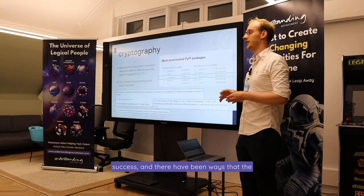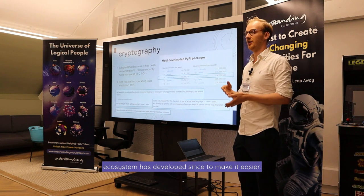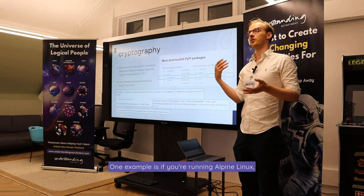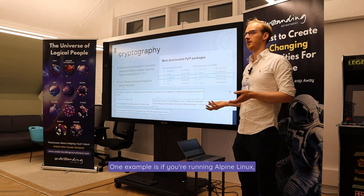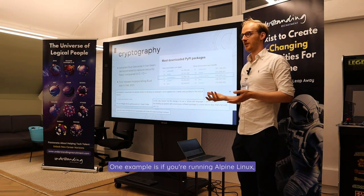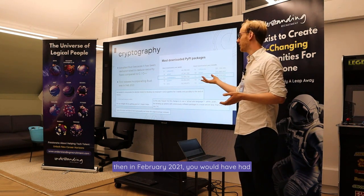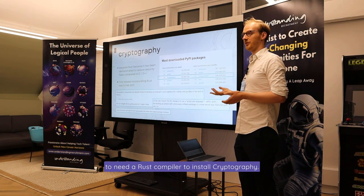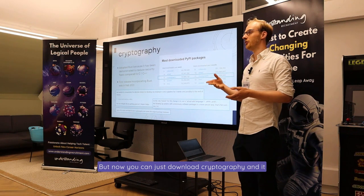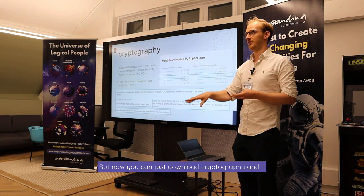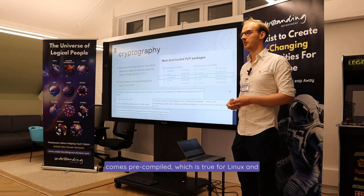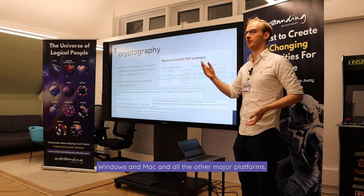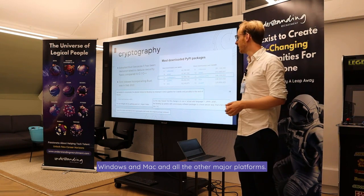The ecosystem has developed since to make it easier. If you're running Alpine Linux, in February 2021 you would have needed a Rust compiler to install cryptography. But now you can just download cryptography and it comes pre-compiled for Linux, Windows, Mac, and all the other major platforms.